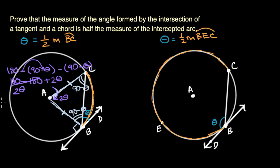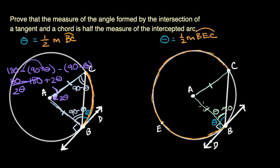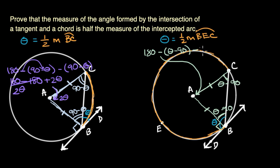Now let's do the same exercise for the obtuse case in a very similar way. Let me draw some radii. We know this length equals that length, and we know this is 90 degrees because DB is a tangent. So now this angle here is going to be not 90 minus theta, but theta minus 90. Because this is an isosceles triangle, this angle is also theta minus 90.